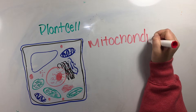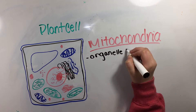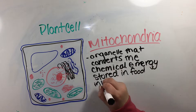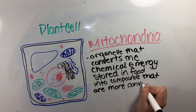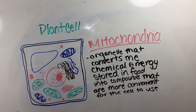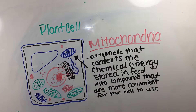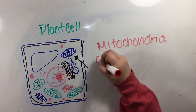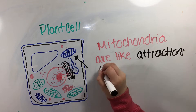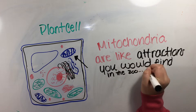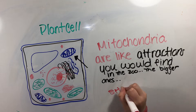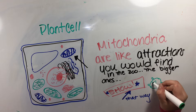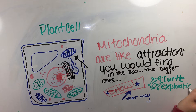Mitochondria is an organelle that converts the chemical energy stored in food into compounds more convenient for the cell to use. Attractions found within the zoo are like mitochondria because they collect tickets and passes in exchange for entrance to exhibits, stores, and animal rides. These attractions break down the value of tickets for various forms of amusement, making the experience more enjoyable.